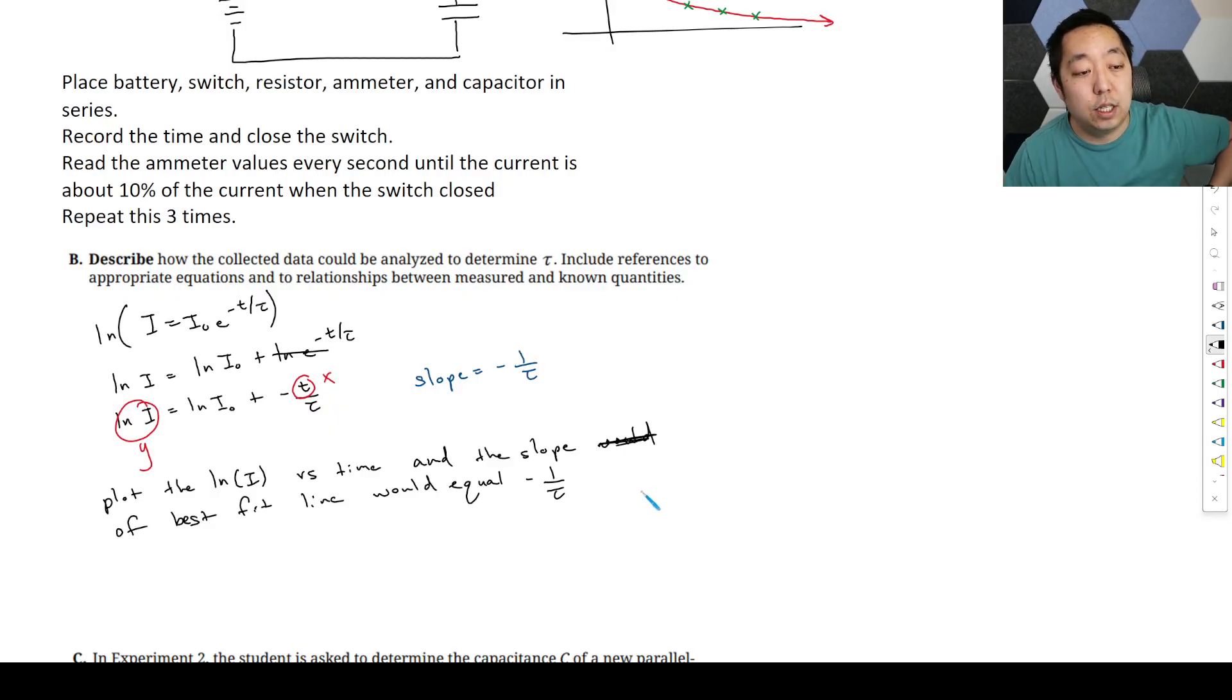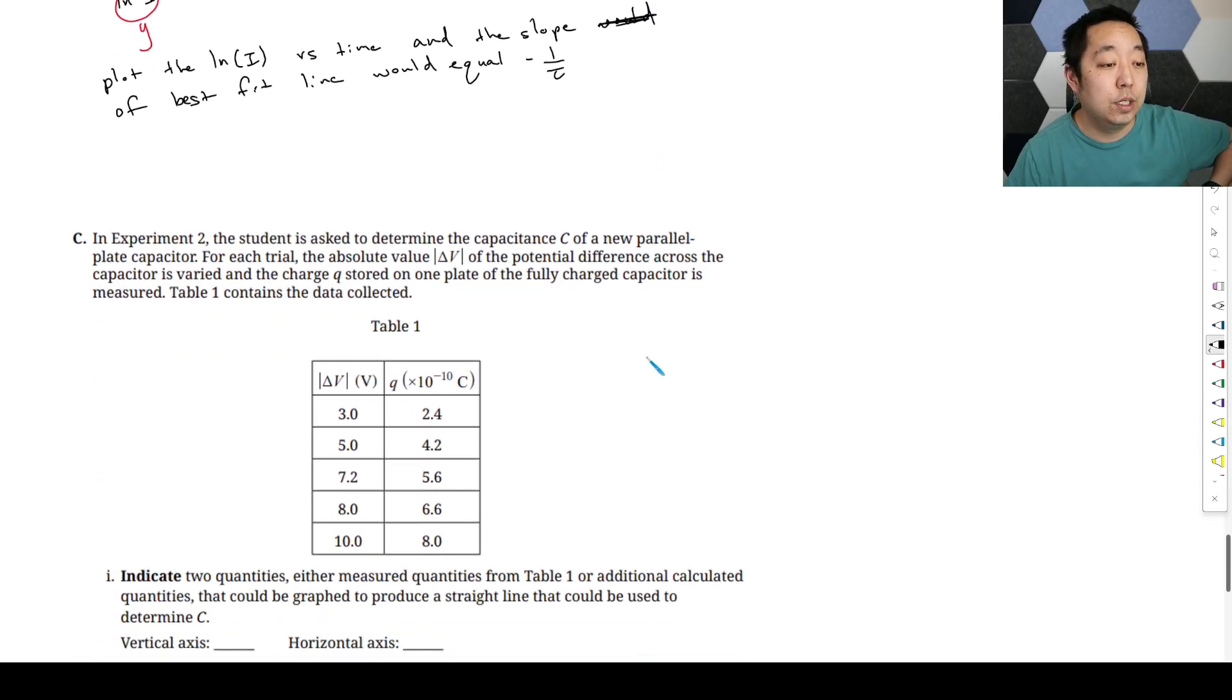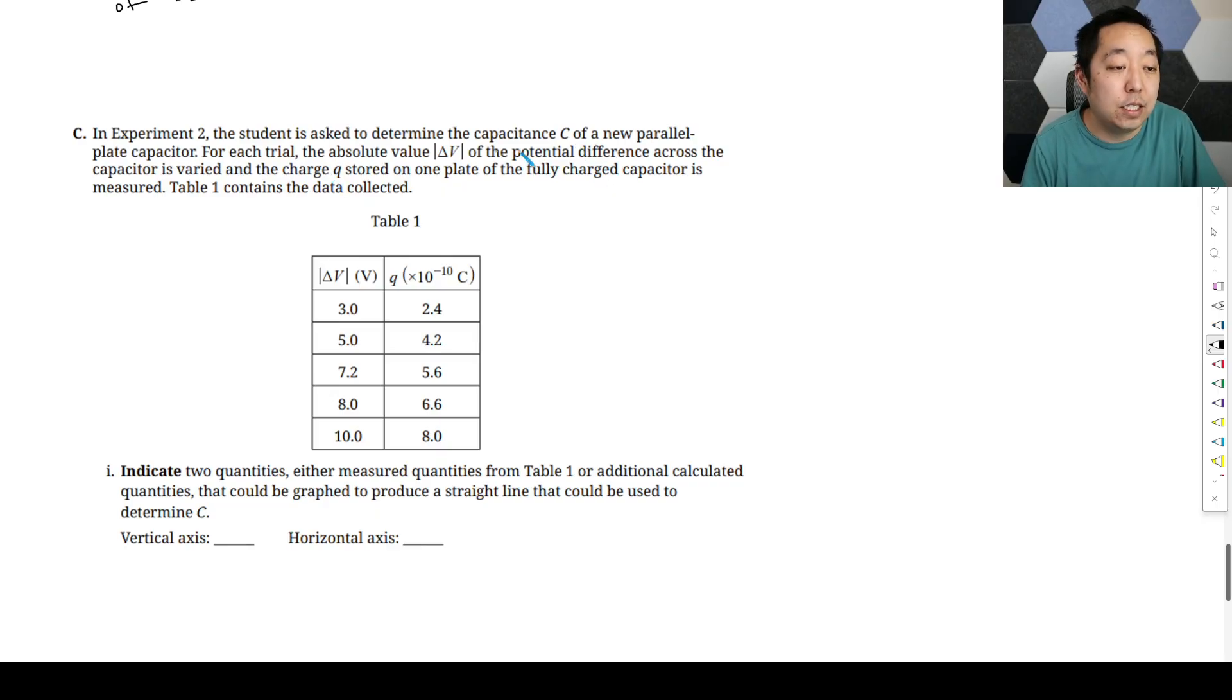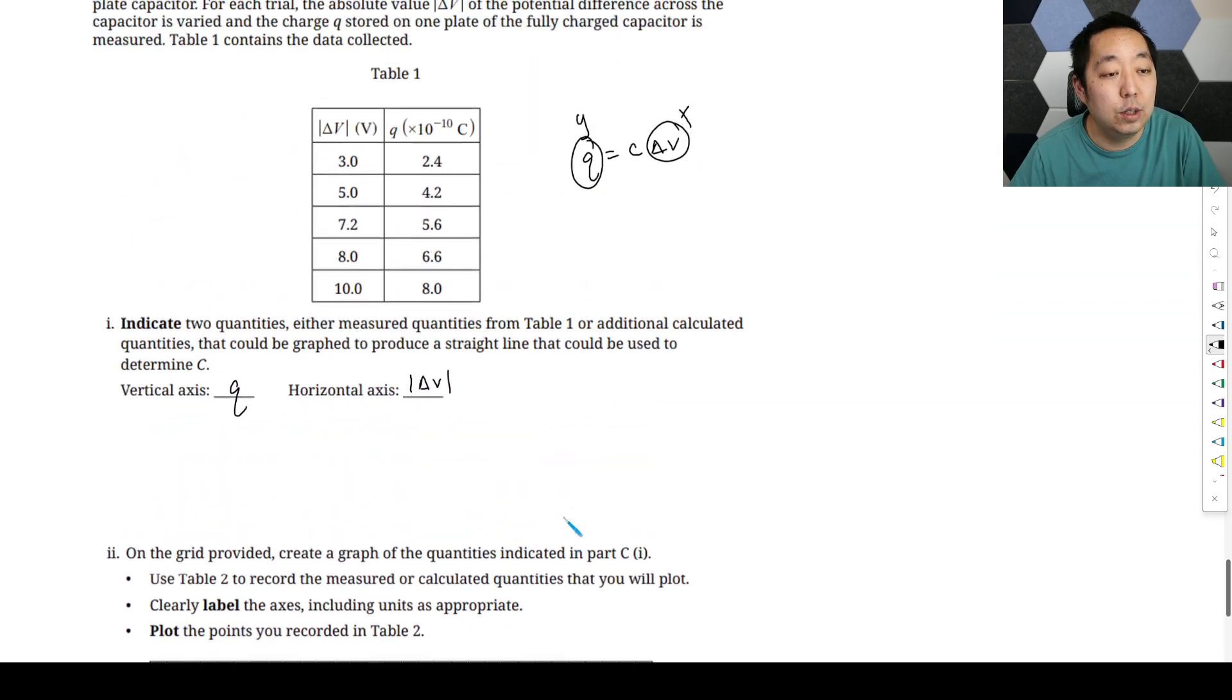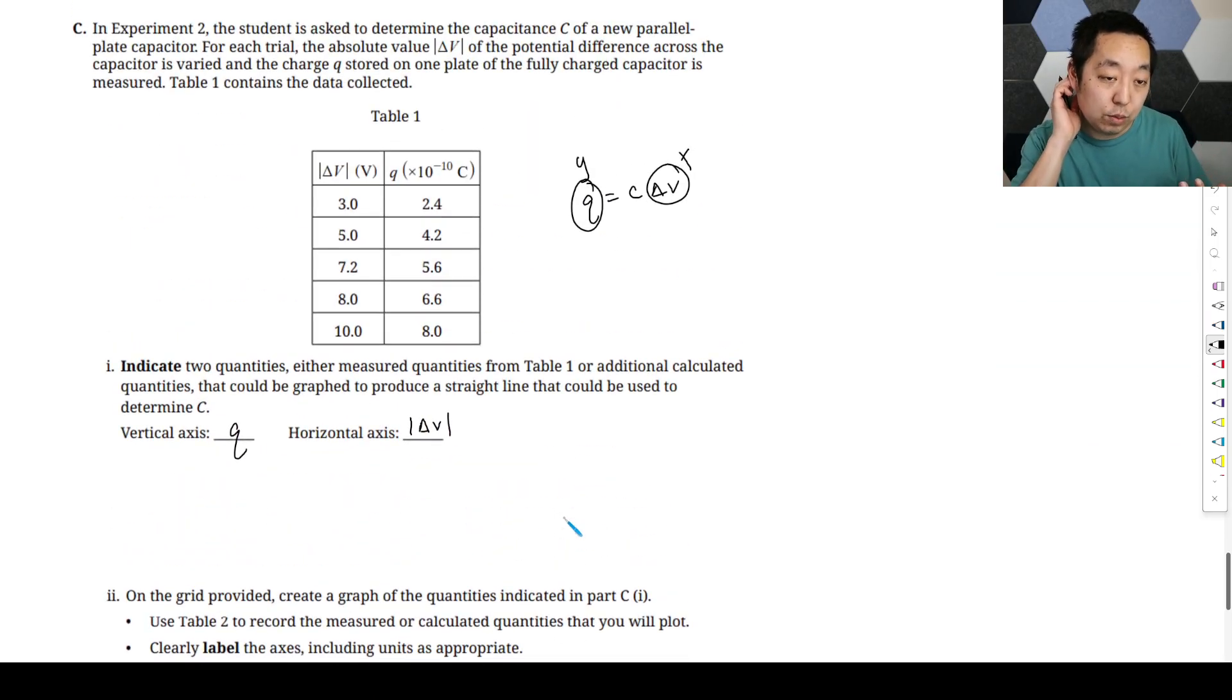So this is a tricky experimental design question, honestly, just because there's nothing to vary like other ones. So experiment two, the student is asked to determine the capacitance of a new parallel plate capacitor. For each trial, the absolute value of the voltage of the potential difference across the capacitor is varying, the charge Q stored in the plate is measured. So we know Q versus, that's Q equals C times V. Indicate two quantities, either measure quantities from table one or additional calculate quantities to be graphed to produce a straight line that could be used to determine C. Well, we'll just make this our y variable, this our x variable, and the slope would be the capacitance. So that's going to be, we're going to put Q and absolute value of delta V there. We don't need to modify any of the values, kind of interesting. This one is just straight up, like, can you plot this data as is, and it should be linear.